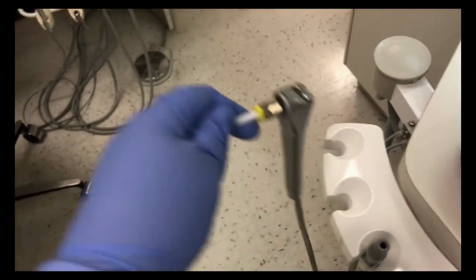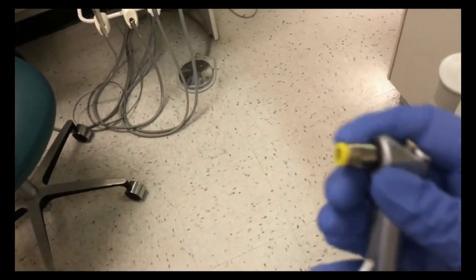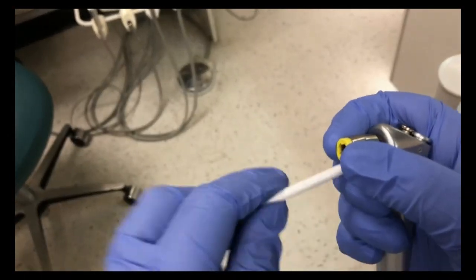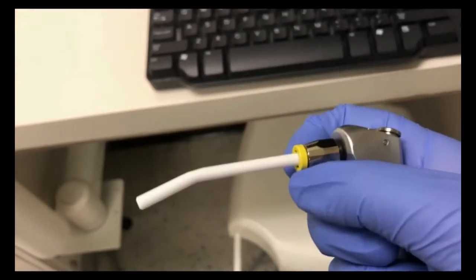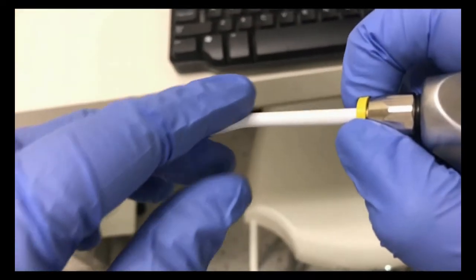To remove the air water syringe tips, pull back on that yellow ring with one hand while you pull out the tip with the opposite hand. Make sure to remove both air water syringe tips, both the assistant's tip and the doctor's tip.